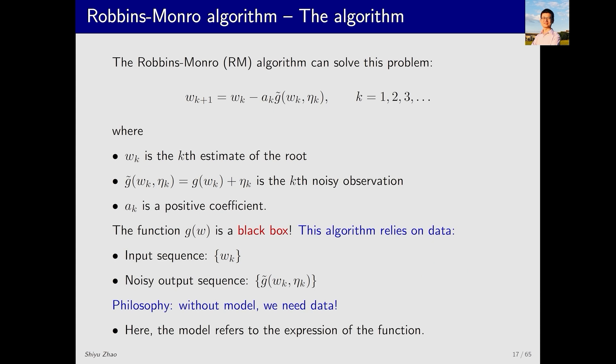Clearly, this reflects an idea: without a model, we need data. Here, the model refers to the expression of the function. This is the same as the model-based and model-free reinforcement learning we introduced earlier. When we have a model, we do not need data. Without a model, we need data. In any case, we must have either.